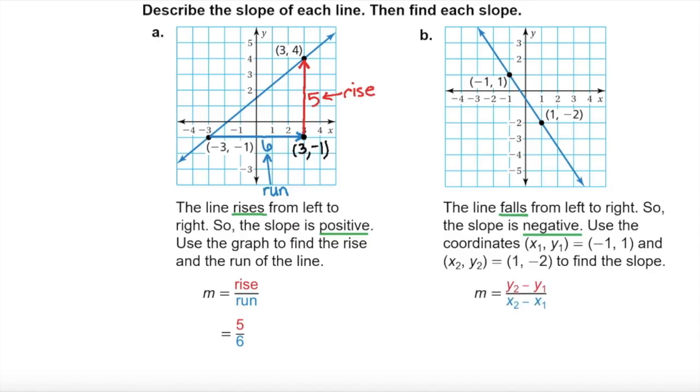The slope formula is m equals the quantity y sub 2 minus y sub 1 divided by the quantity x sub 2 minus x sub 1. Substitute negative 2 for y sub 2, 1 for y sub 1, 1 for x sub 2, and negative 1 for x sub 1. Negative 2 minus 1 is negative 3, and 1 minus negative 1 is 2.